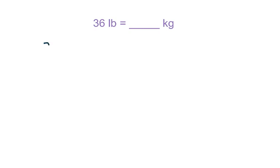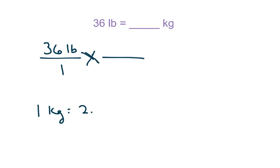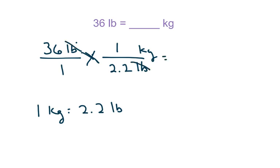Now we have 36 pounds to kilograms. Take what they give you and put it over a 1, then multiply by the conversion factor. We know that 1 kilogram is 2.2 pounds. Make sure when you put this conversion factor in that since pounds is up here, you need pounds down here, and you've got kilograms. So 1 kilogram is 2.2 pounds. Cancel your units, then multiply across the top: 36. Multiply across the bottom: 2.2.